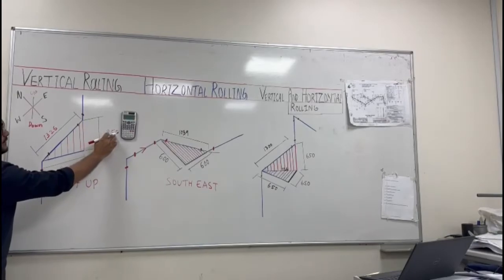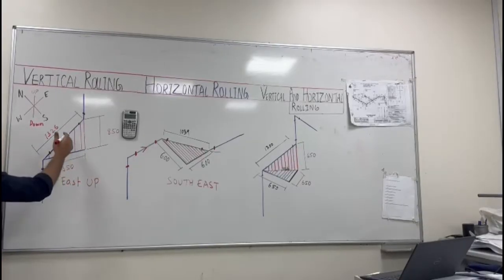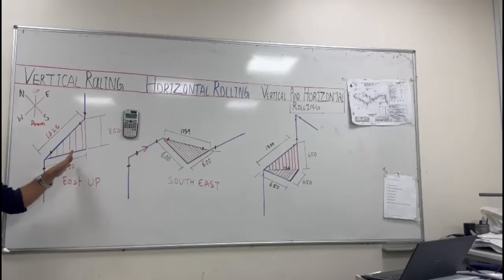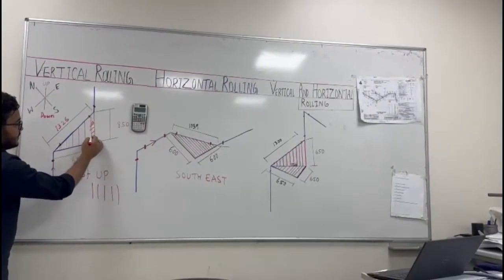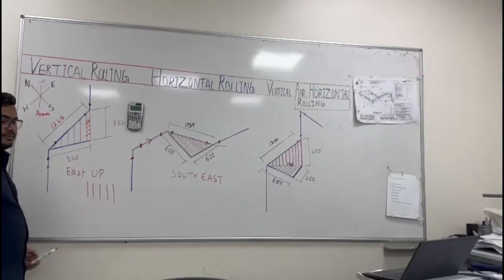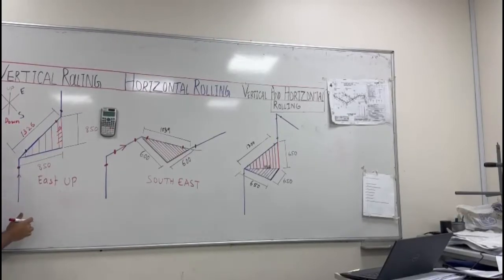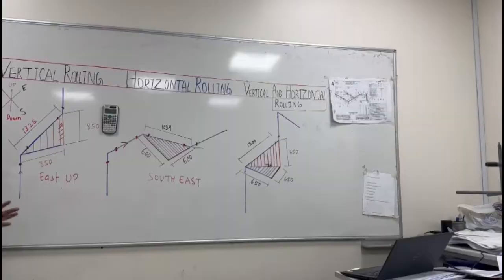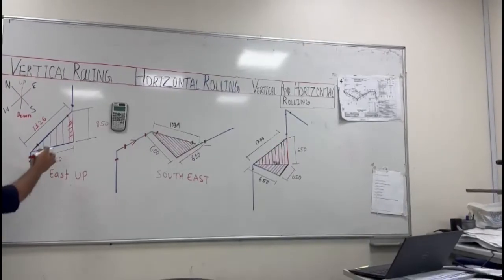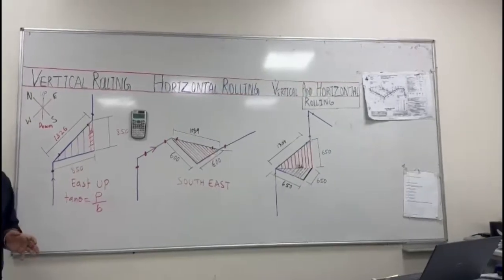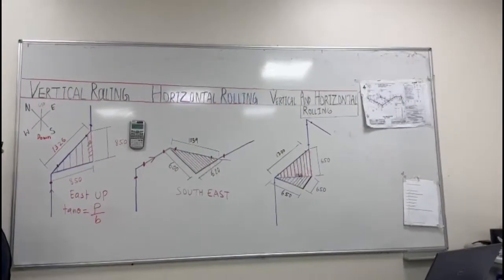We have here 850 millimeters. Now we will take the calculation. How do we know this is vertical rolling? See this hash-type lining — this is called vertical rolling. Now I will make you understand the calculation. We know: tan theta equals perpendicular divided by base.